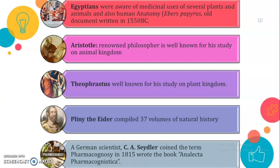C.A. Seeger was a German scientist who coined the term 'pharmacognosy' in 1815, and his work is entitled Analecta Pharmacognostica. Pharmacognosy is made up of two Greek words: 'pharmakon' meaning drug and 'cognosy' meaning to acquire knowledge of. C.S. Seeger coined the term pharmacognosy and wrote the book Analecta Pharmacognostica.